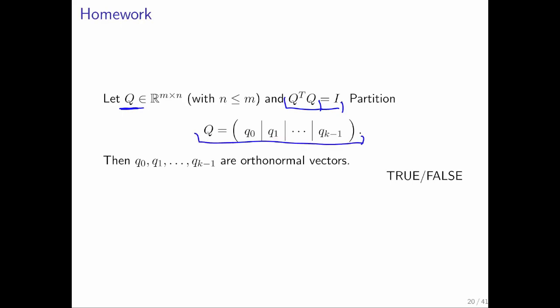If we partition Q into its columns, is it the case that those columns are mutually orthonormal?